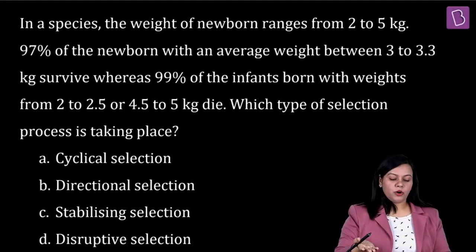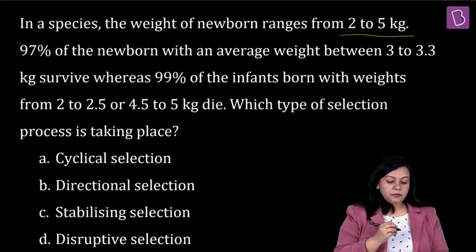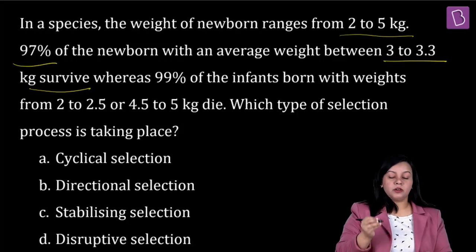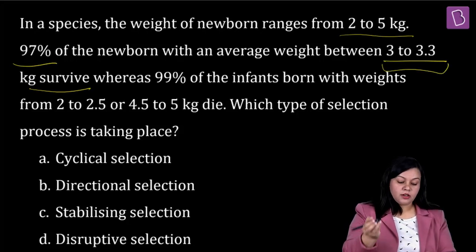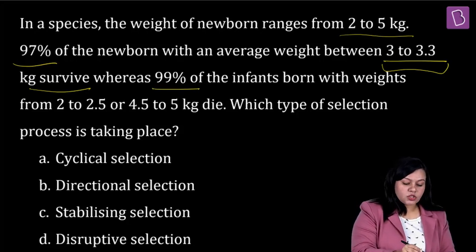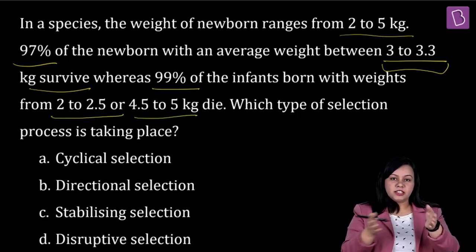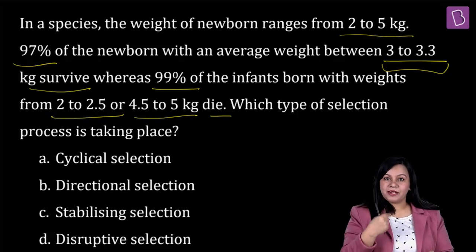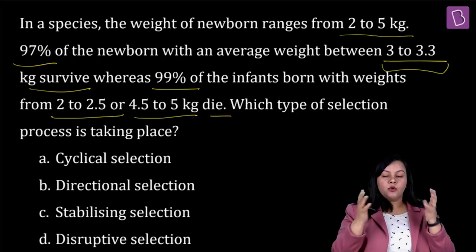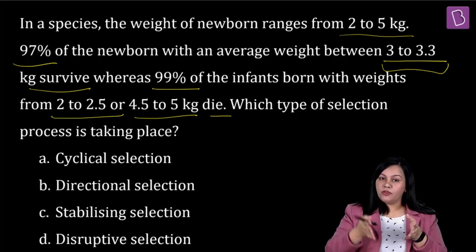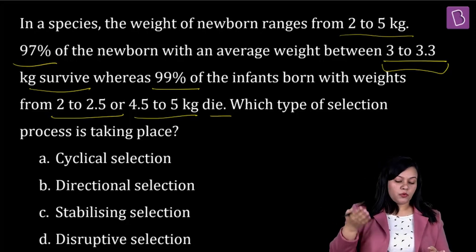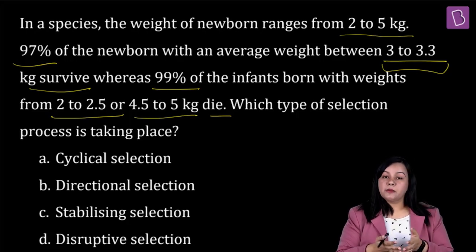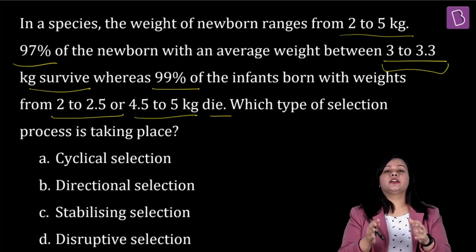In a species, the weight of newborns ranges from 2 to 5 kg. 97% of newborns with an average weight between 3 to 3.3 kg survive, whereas 99% of infants born with weights of 2 to 2.5 or 4.5 to 5 kg — the extreme ranges — are going to die. What type of selection is taking place? We are talking about natural selection, which is the key to evolution.